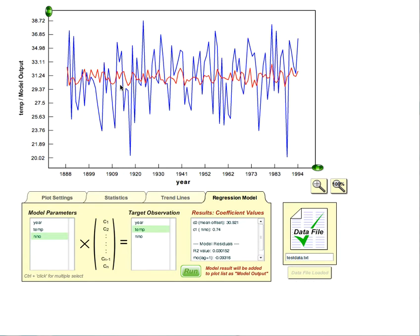For a particularly strong La Nina event, which would correspond to a negative Nino 3.4 anomaly of, say, negative 2 or so, we would get a one-and-a-half degree Fahrenheit cooling effect on State College December temperatures.